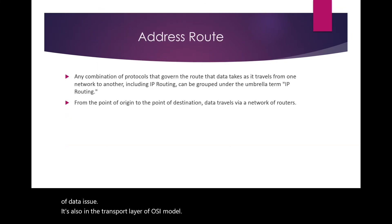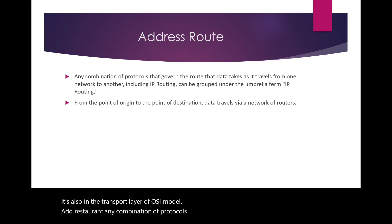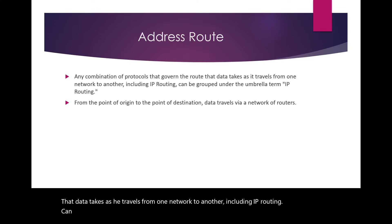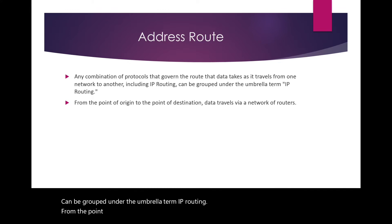Address and routing: Any combination of protocols that govern the route that data takes as it travels from one network to another, including IP routing, can be grouped under the umbrella term IP routing. From the point of origin to the point of destination, data travels via a network of routers.